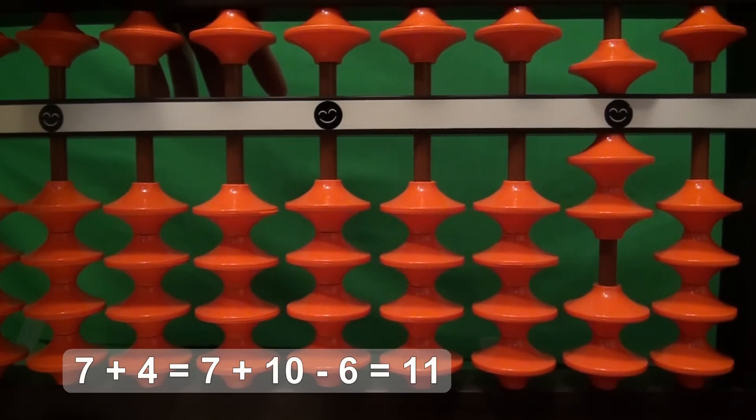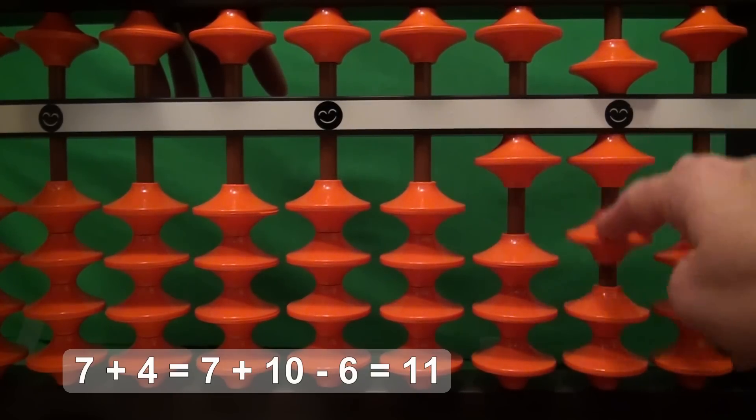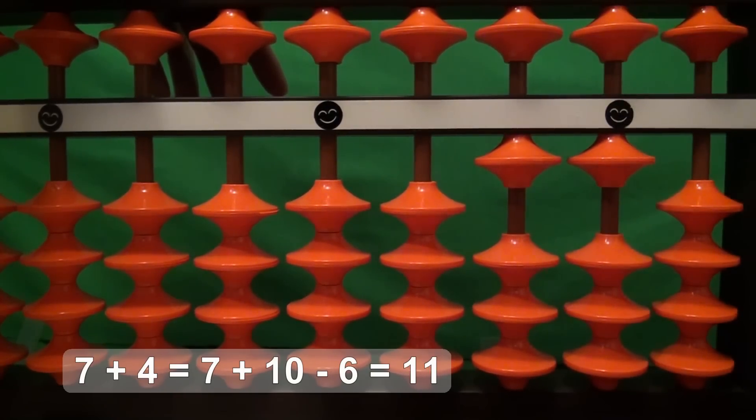So for this one, we have to add 10 and take away 6. Adding 10 and taking away 6 is equivalent to adding 4. So we add 10 and take away 6, and our answer is 11. 7 plus 4 equals 11.